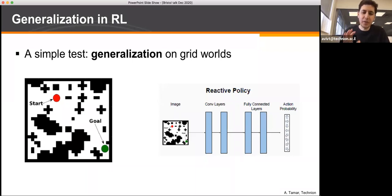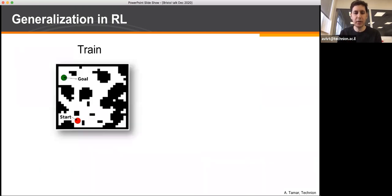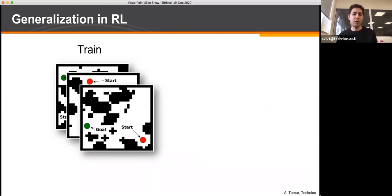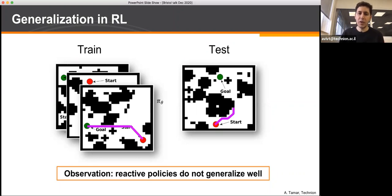To demonstrate this we used the simplest RL problem: a grid world. There's an agent in red that needs to navigate to a goal position in green without touching black obstacles. We trained a network using imitation learning on randomly generated maps and asked whether the learned policy would generalize to a new map not in the training set. These reactive policies did really well on training data — they memorized it — but did really badly on test data, failing to understand this is a planning problem requiring navigating around obstacles.